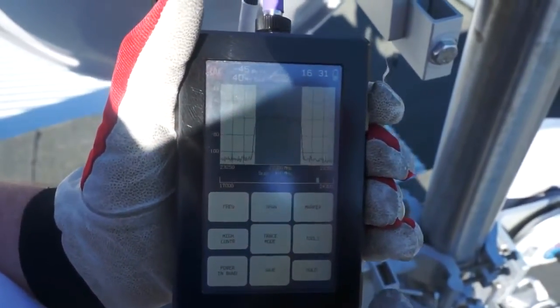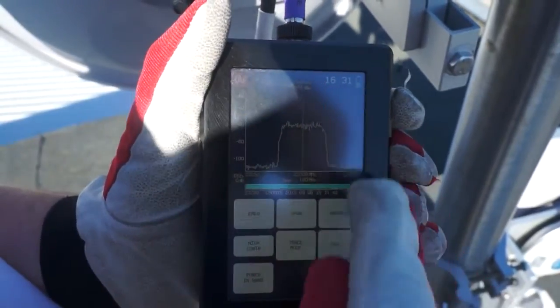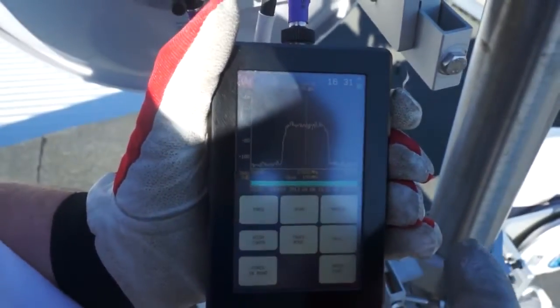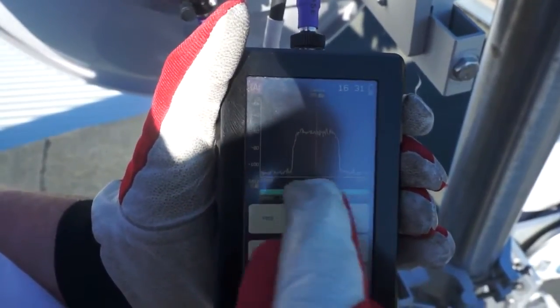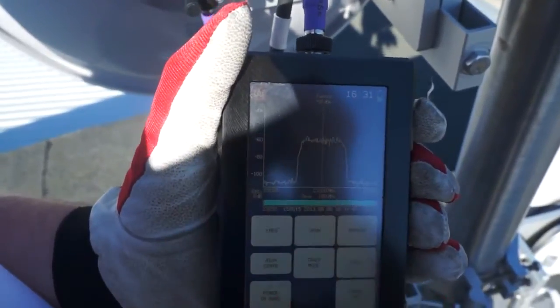Now the next thing I can do with this is I can also hit the save button. And it will save this screen for further analysis. So not only to be able to show that the radio is transmitting a 40 megahertz wide channel but also that I was able to hit my target RSL.